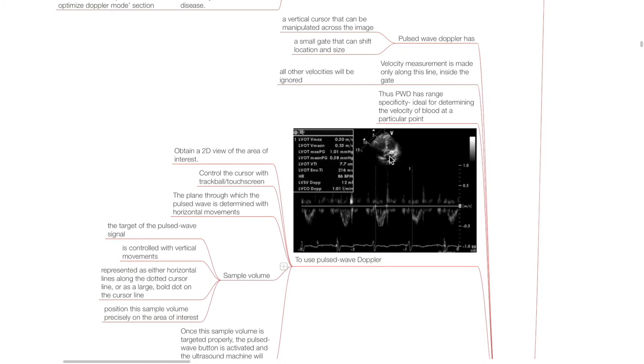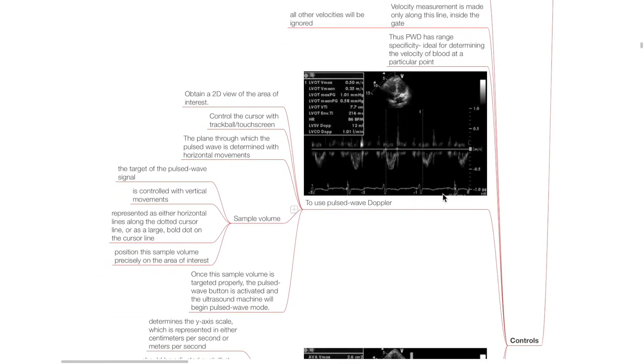Controls for pulsed wave Doppler: pulsed wave Doppler has a vertical cursor that can be manipulated across the image and a small gate that can shift location and size. Velocity measurement is made only along this line inside the gate. Thus pulsed wave Doppler has range specificity, ideal for determining the velocity of blood at a particular point. To use pulsed wave Doppler: obtain a 2D view of the area of interest; control the cursor with the trackball or touchscreen; the plane through which the pulse wave is determined with horizontal movements; the sample volume is controlled with vertical movements and is represented as horizontal lines along the dotted cursor line or as a bold dot on the cursor line. Position this sample volume precisely on the area of interest, then activate the pulsed wave button.